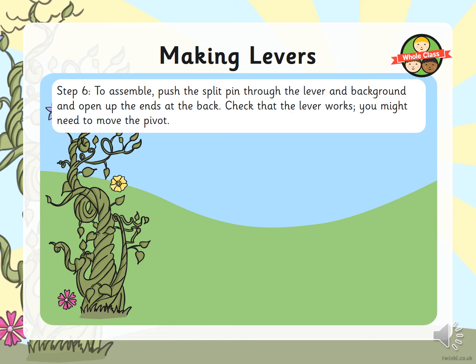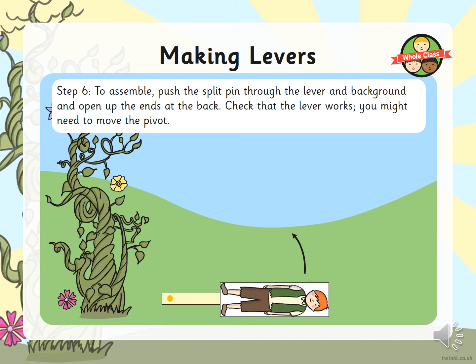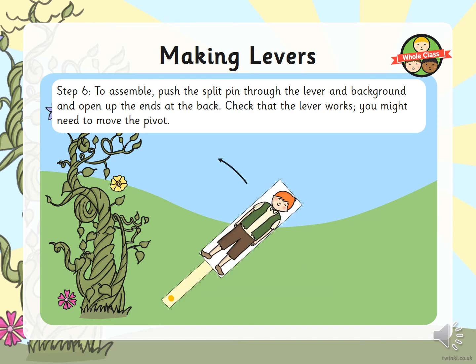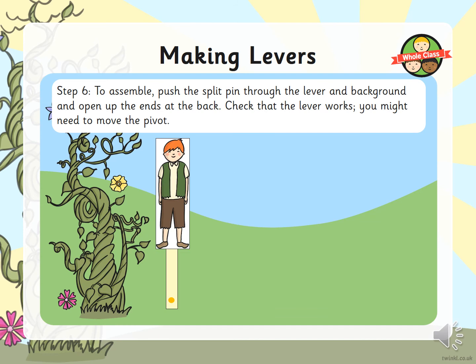Check that your lever works — you might need to move it to see if it is in the right place. Jack should be able to go up and down the beanstalk.